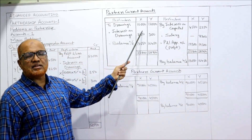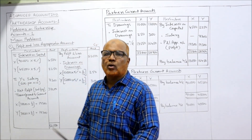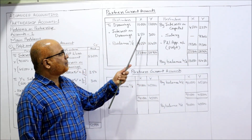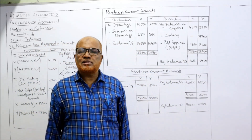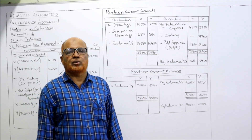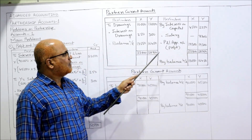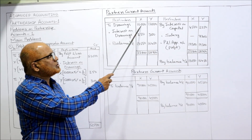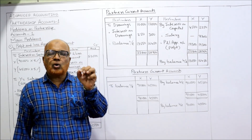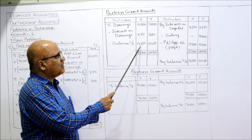Drawings: X drew 10,000 and Y drew 12,000. Interest on drawings: 250 to X and 300 to Y. Now we find the balancing figure — the closing balance in X's current account. Credit side total: 4,500 + 19,300 = 23,800. Subtract: 23,800 − 10,000 − 250 = 13,550. So the closing balance in X's current account is 13,550, carried down and brought down.